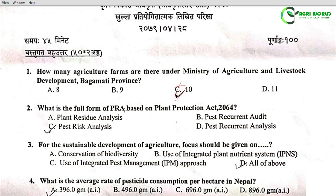Question 2: What is the full form of PRA based on Plant Protection Act 2064? Options: Plant Residue Analysis, Pest Recurrent Audit, Pest Risk Analysis, Pest Recurrent Analysis. The correct answer is Pest Risk Analysis.